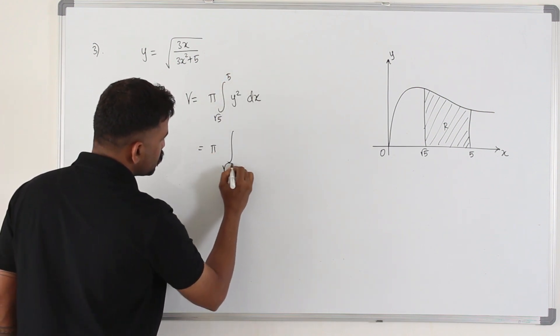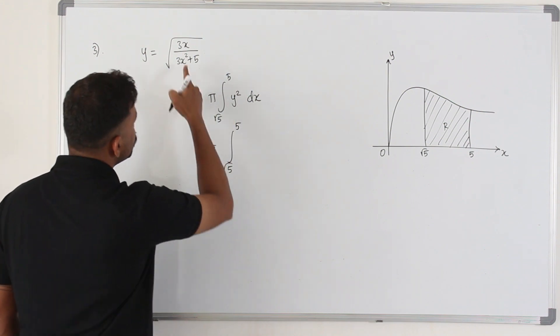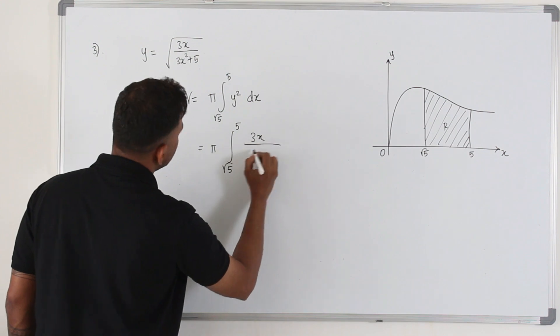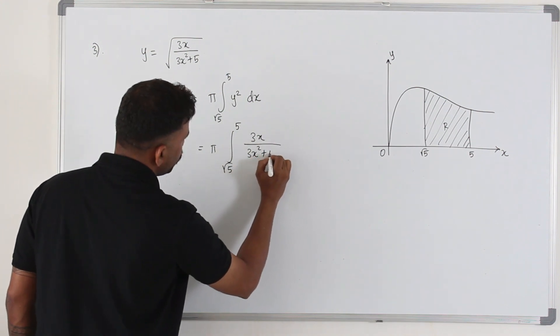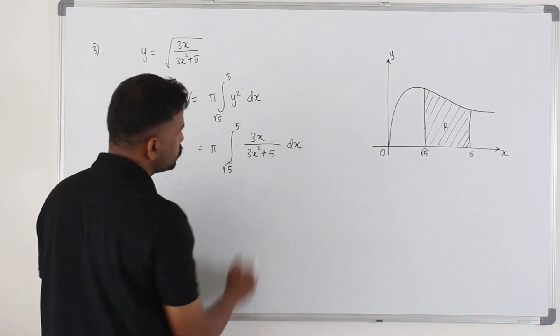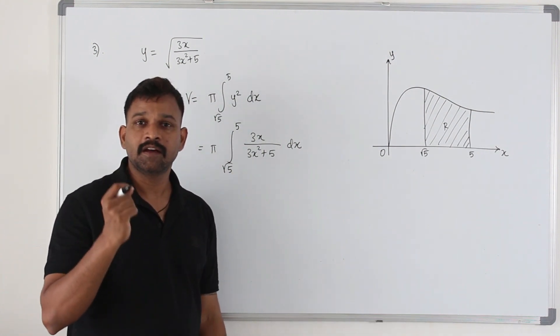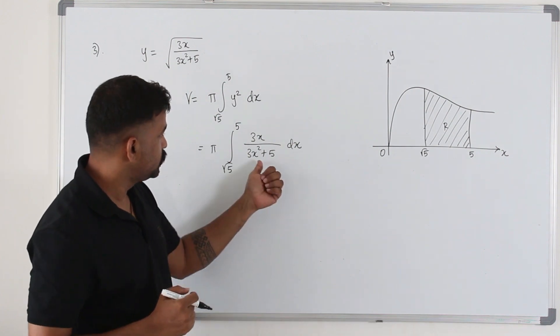So it's pi integral from square root of 5 to 5, y squared. So the square root will be gone—3x over 3x squared plus 5 dx. How are we going to integrate this function? You must have learned something called reverse chain rule to integrate this.